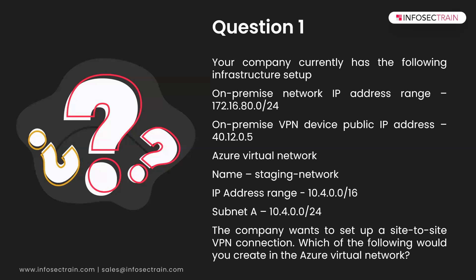The company wants to set up a site-to-site VPN connection. Which of the following would you create first in the virtual network? The question is asking: given this infrastructure, what is the very first thing you are going to create in your virtual network when deploying a VPN?